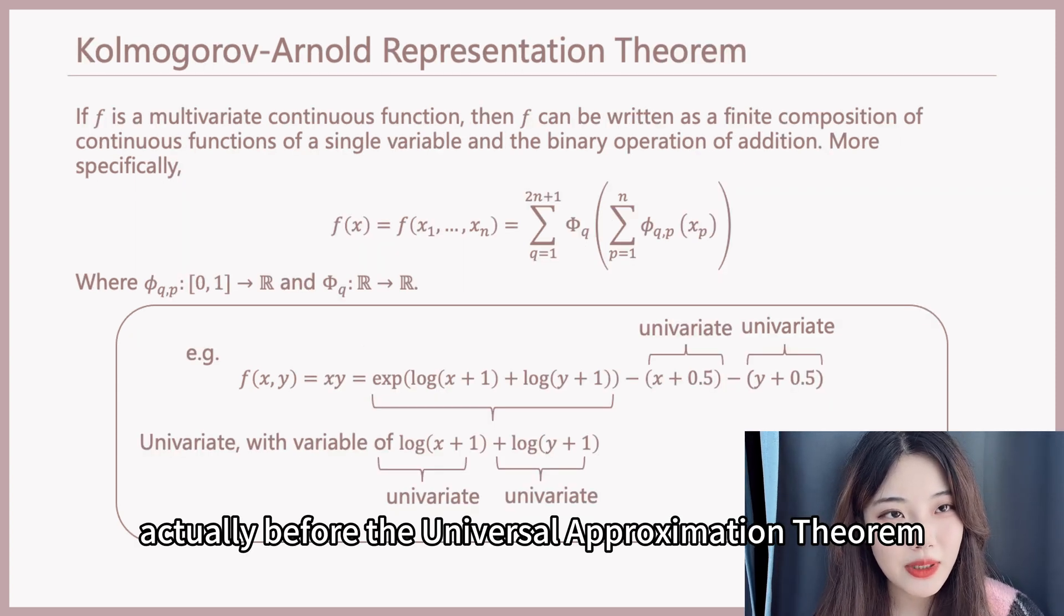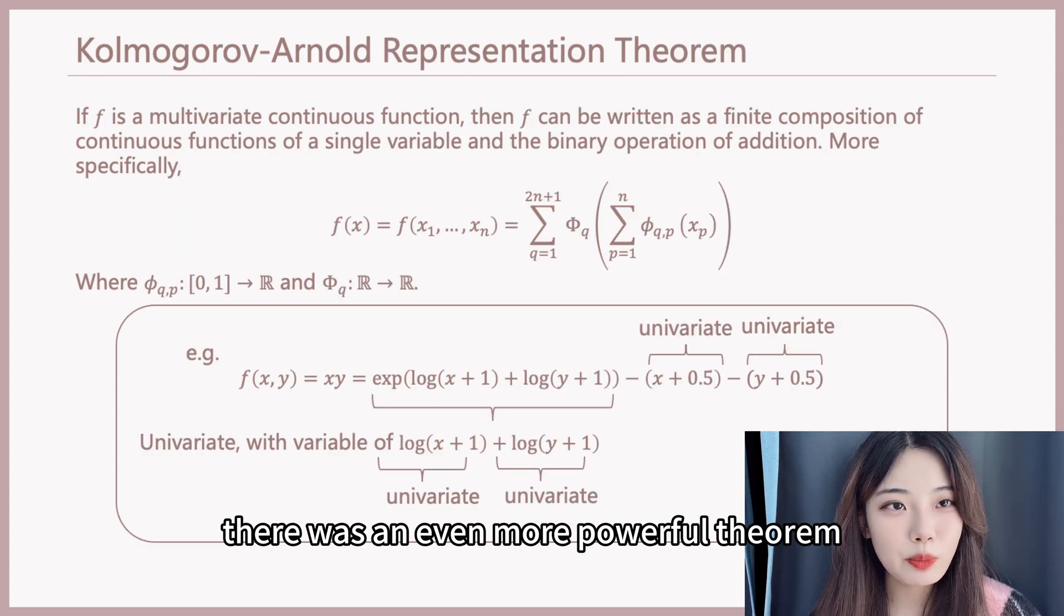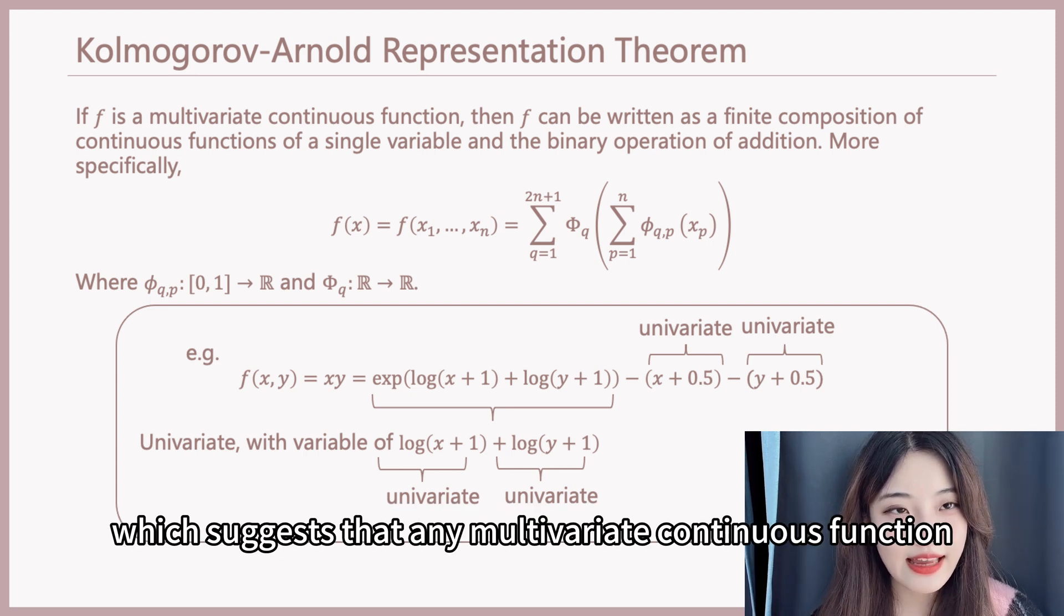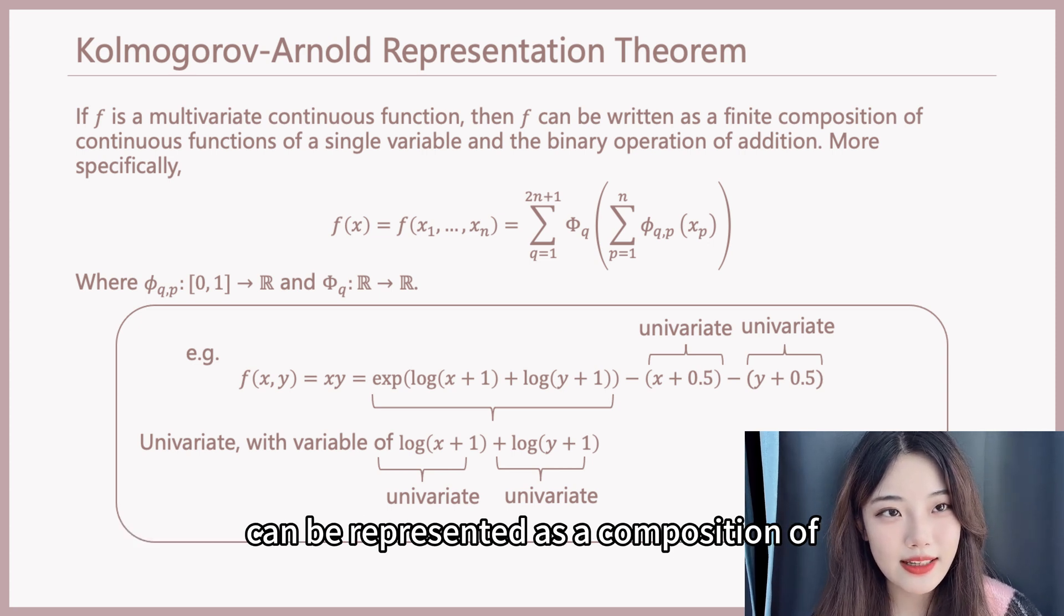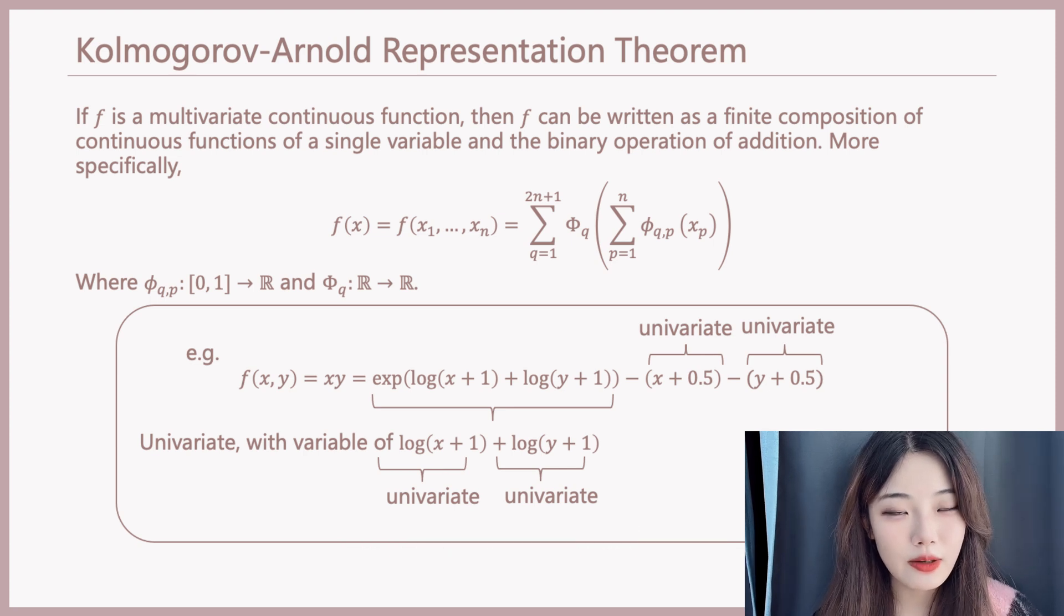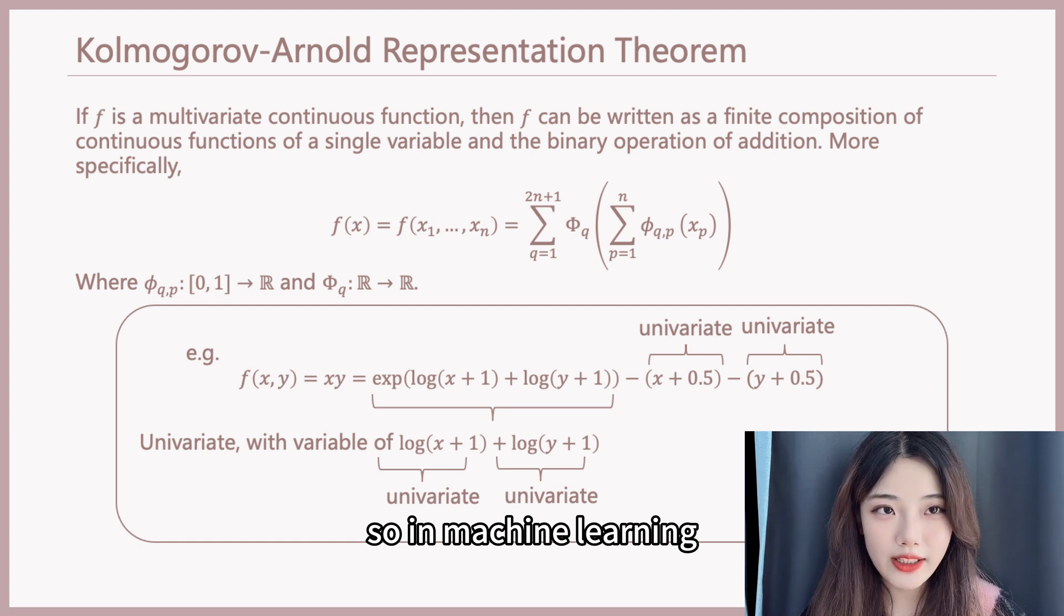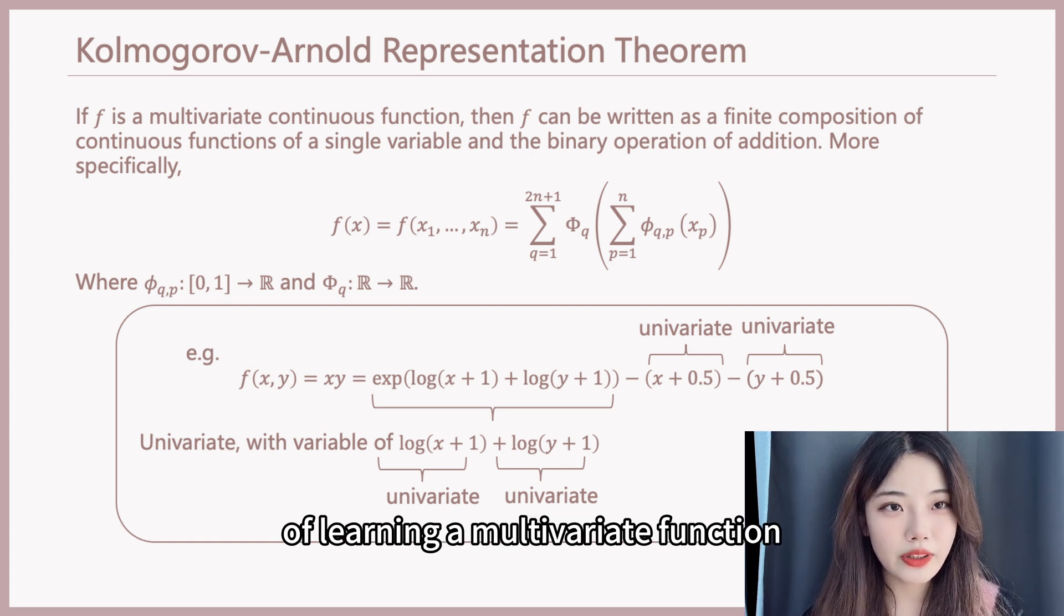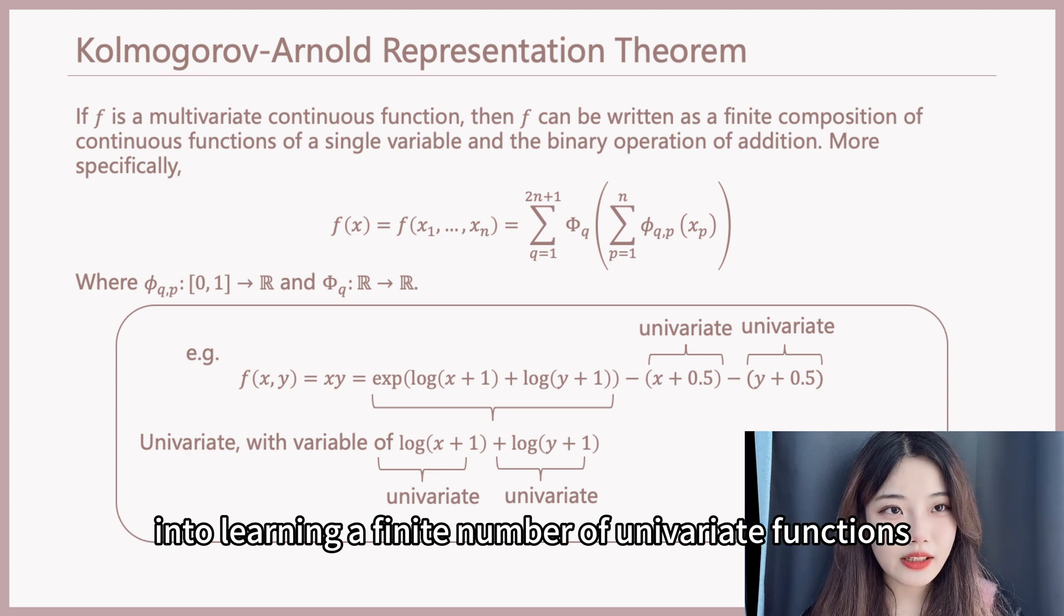Actually, before the universal approximation theorem, there was an even more powerful theorem known as the Kolmogorov-Arnold representation theorem, which suggests that any multivariate continuous function can be represented as a composition of 2n plus 1 univariate functions, where n is the input dimension. So in machine learning, can we try this idea to simplify the process of learning a multivariate function into learning a finite number of univariate functions?